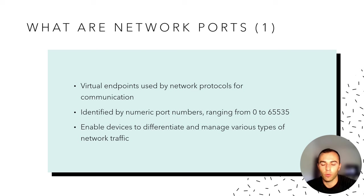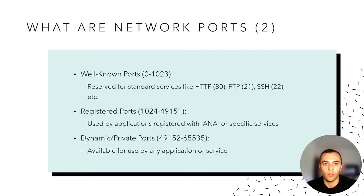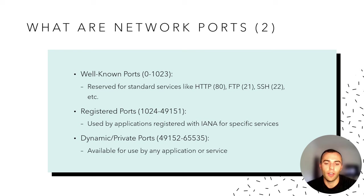There are three categories of ports. First, you have well-known ports, which are from 0 to 1,023. These ports include popular services such as HTTP, FTP, and SSH. There's a second category, which is registered ports that range from 1,024 to 49,151. Those are used by specific application services — for example, SQL would be one of them. The third category would be dynamic or private ports ranging from 49,152 to 65,535, and those can be available for a variety of uses.